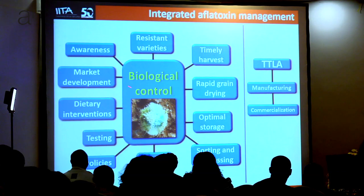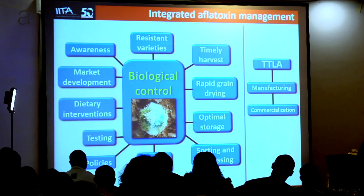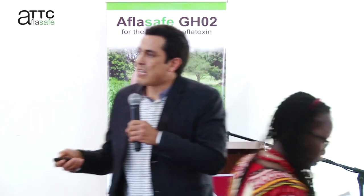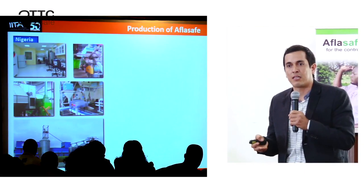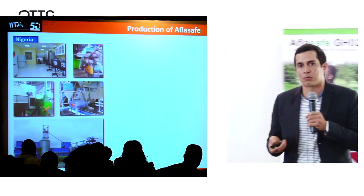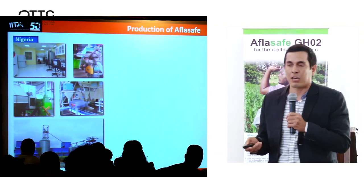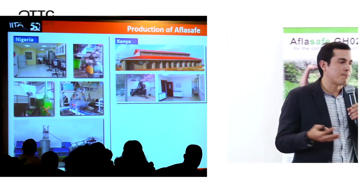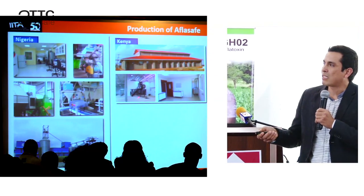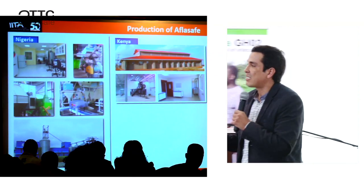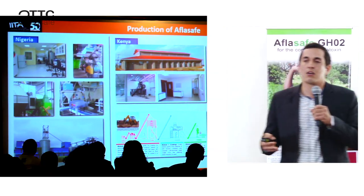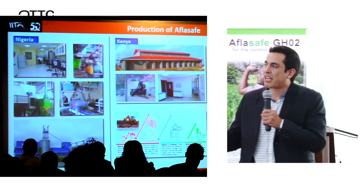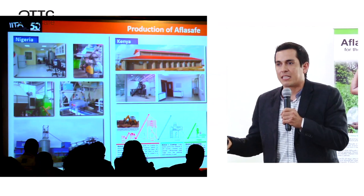This technology will not reach farmers by itself. We need technology transfer and licensing agreements for manufacturing, distribution, and commercialization. This is the Aflasafe manufacturing facility in Nigeria — the first manufacturing facility for this type of product in Africa and one of three across the world. In Kenya, we have a newer facility consisting of different modules that can scale up depending on industry capacity and demand.